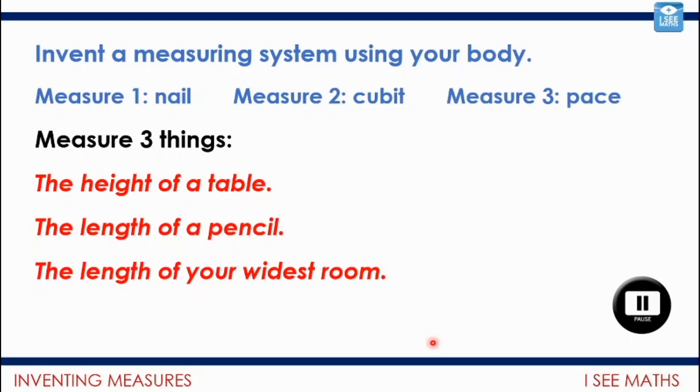That was probably quite a long pause that you had there. What I'm quite interested in is, for these different things, we have to think, well, which measure is it appropriate to measure in? So for the height of a table, I went for cubits. I thought that would be about right. I thought nails were a little bit small to measure the height of the table. Whereas the length of a pencil I did go for in nails. I couldn't really measure that in cubits or paces because it's less than one. I thought it was much better to measure it in nails. Whereas the length of my widest room, well, there I went for my biggest measurement, paces.